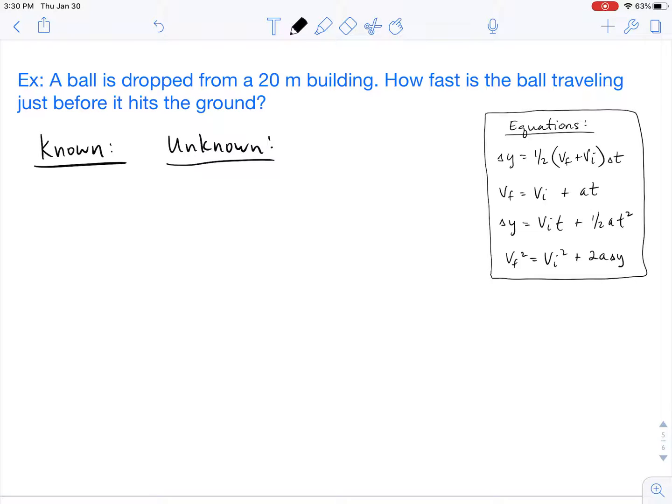We start off in the problem, it tells us that the ball is dropped. So that in itself is a known value. When things are being dropped, that tells us that the initial velocity is 0 meters per second.